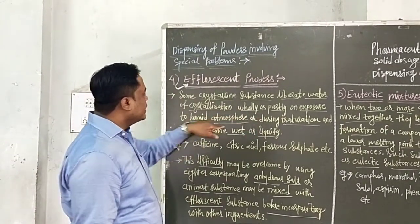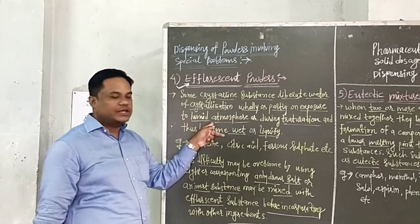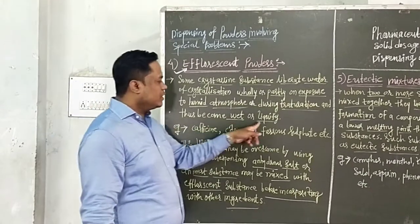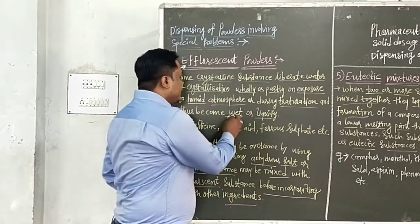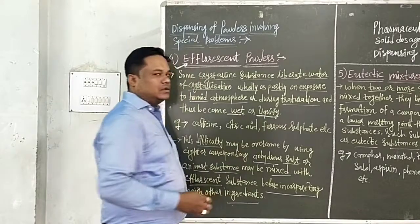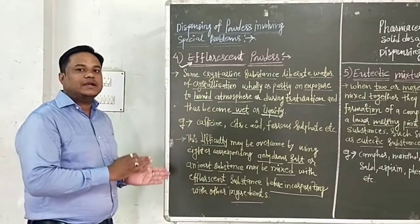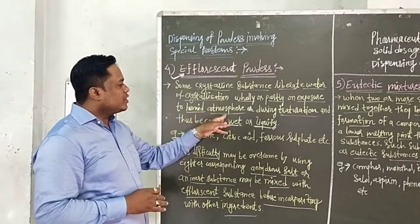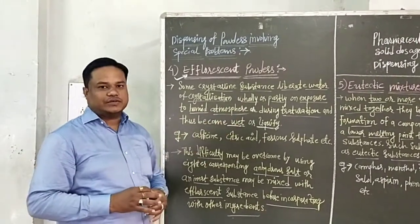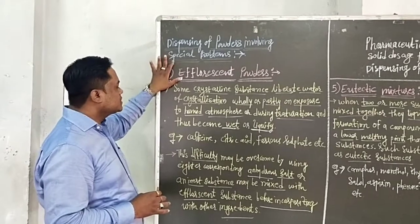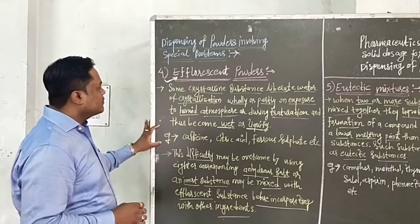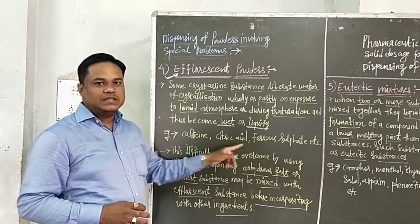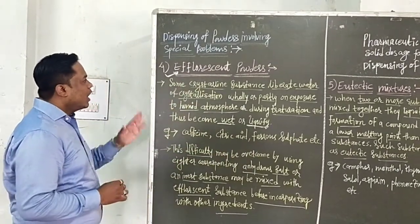Because of atmospheric conditions or during trituration, efflorescent substances become wet or liquefied due to the loss of water from their hydrated salts upon exposure to a humid atmosphere or during trituration. Examples of efflorescent powders include caffeine, citric acid, and ferrous sulfate.